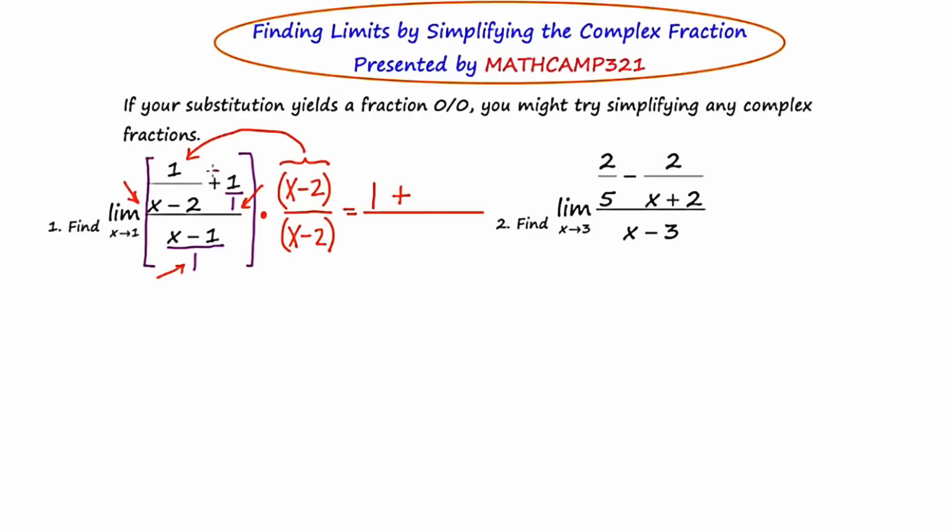Now our next operation is a plus, so I'm going to write a plus. And that came from right here. And now I'm going to distribute the x minus 2 into the top right, which would be like multiplying it by 1. And taking anything and multiplying it by 1 just leaves you what you started with, which is x minus 2.